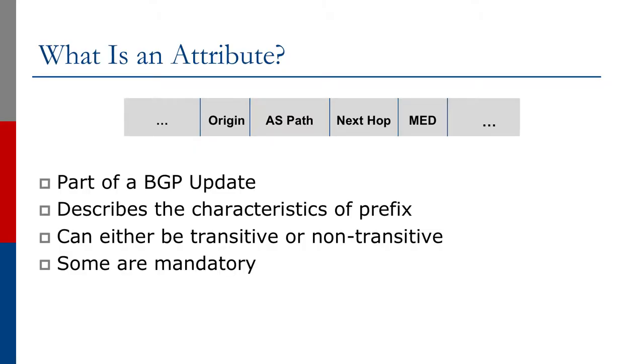We're now going to move on and have a look at BGP's attributes. By way of introduction, we're going to look at what an attribute actually is. It's part of the BGP update, so when a BGP router sends routing information to its neighbour, not only does it send the prefix, it sends lots of other pieces as well. These pieces are really the characteristics of the prefix — the attributes.